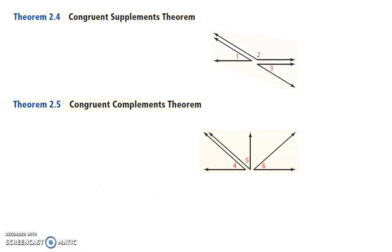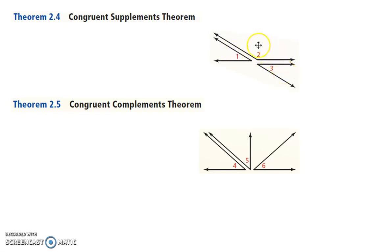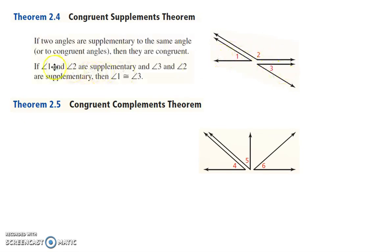Here are Theorems 2-4 and 2-5, the Congruent Supplements Theorem. If two angles are supplementary to the same angle — so angles 1 and 2 are supplementary, and angles 3 and 2 are supplementary — then angles 1 and 3 are congruent to each other.